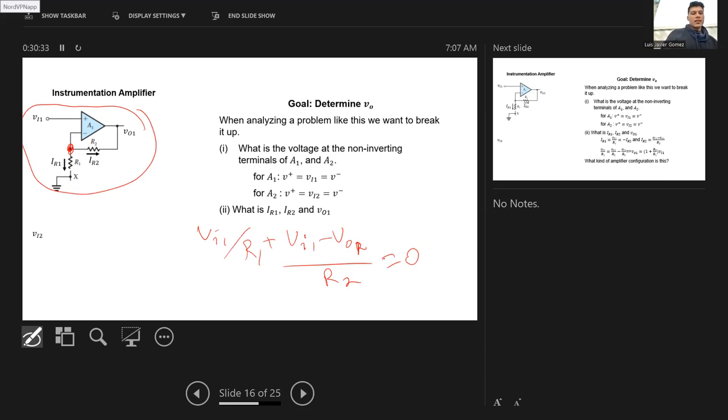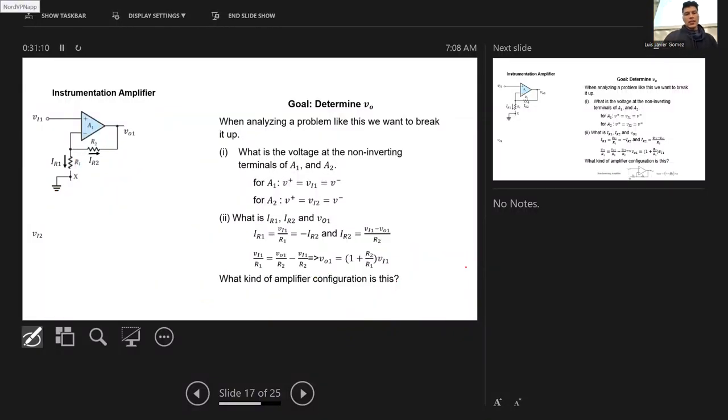You have to basically move this to the other side. So you move this to the other side, and then you get VO1 divided by R2 equals Vi1 times 1 over R1 plus 1 over R2. Then you multiply everything by R2, and so now you get that VO1 equals Vi1 times R2 over R1 plus 1. That's your actual gain here.